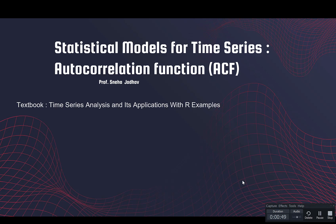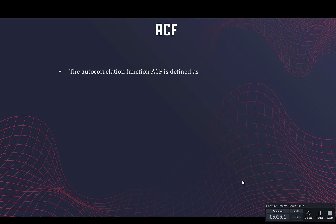Welcome back. So far we have taken a good look at the autocovariance function, so now we take the next step and look at the autocorrelation function. The autocorrelation function — I'm denoting it by rho — so the autocorrelation between your series at time point s and time point t is basically the autocovariance divided by the standard deviations.